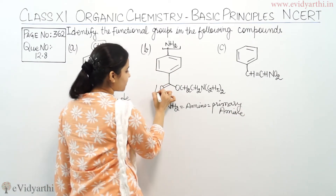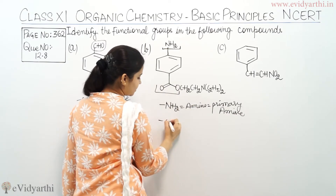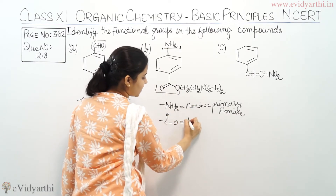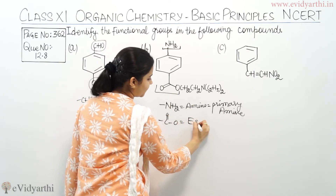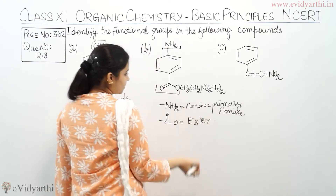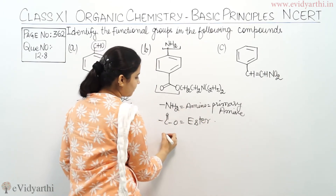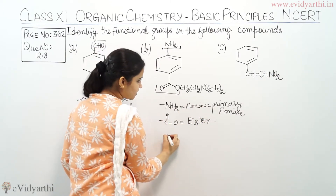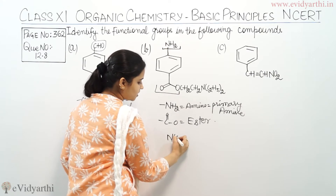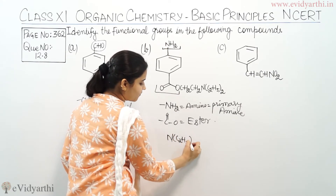The next functional group is ester — C double bond O and O — it is an ester. The third functional group: I can see N with C2H5 groups attached.